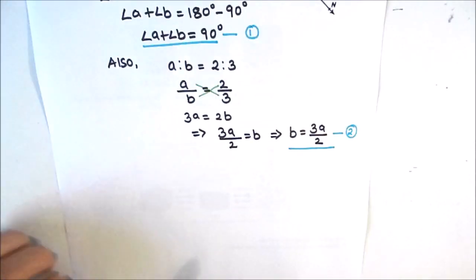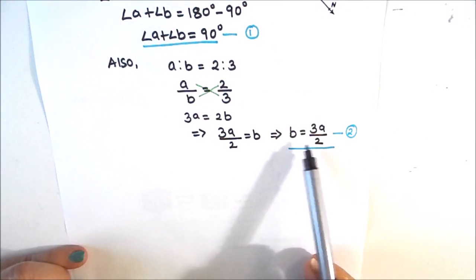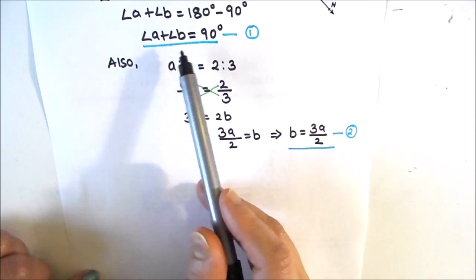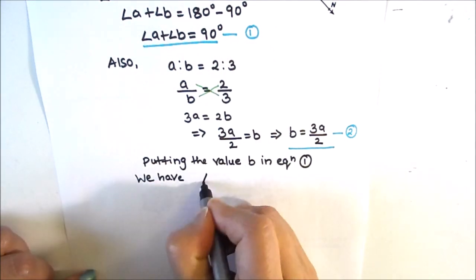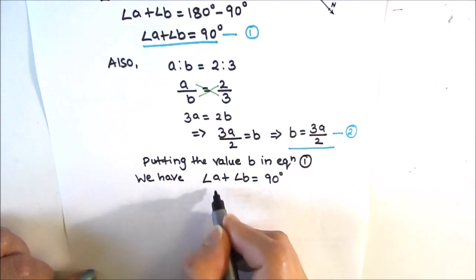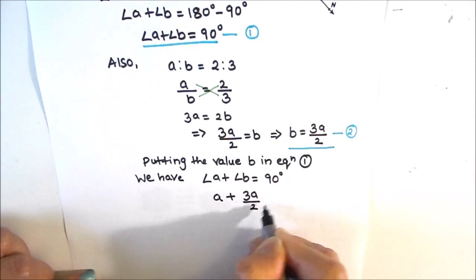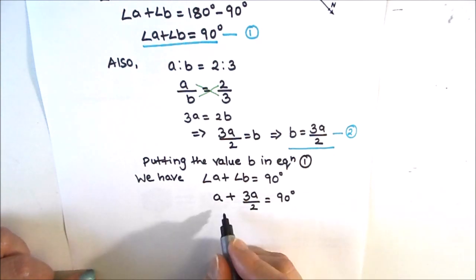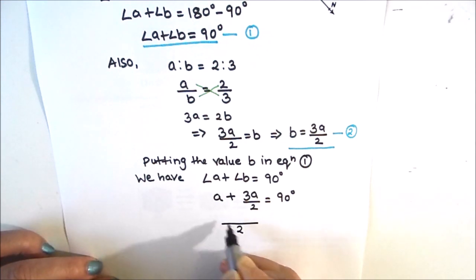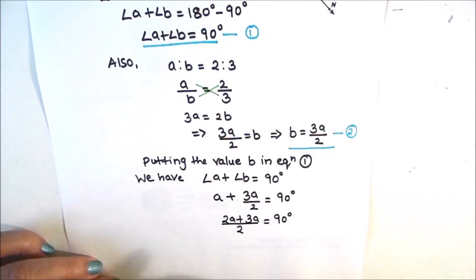From equation 1 we have A plus B equals 90 degrees, and from equation 2 the value of angle B is 3A upon 2. Substituting B into equation 1: A plus 3A upon 2 equals 90 degrees. Taking the common denominator of 2, this becomes 2A plus 3A divided by 2 equals 90 degrees.